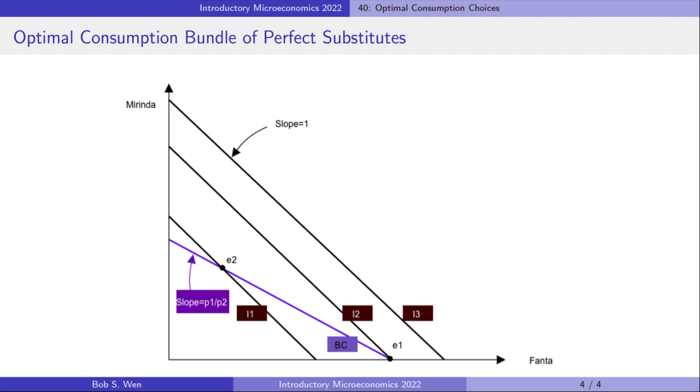Similarly, if Fanta is more expensive than Marinda, the consumer will spend all her income on Marinda. It is also a corner solution on the vertical axis.